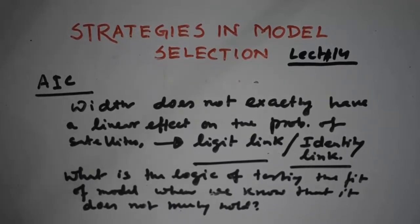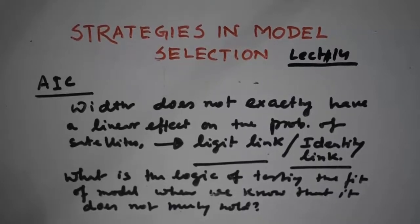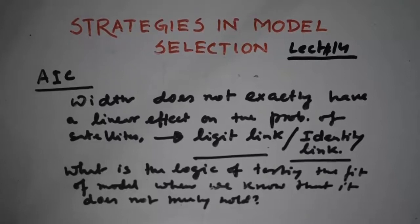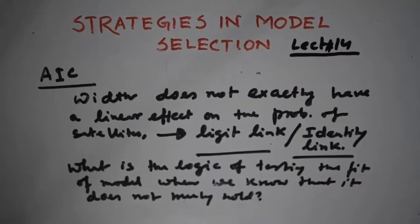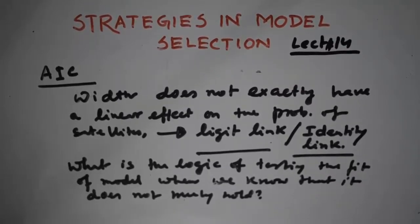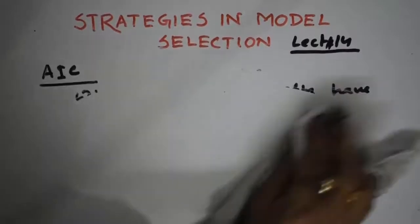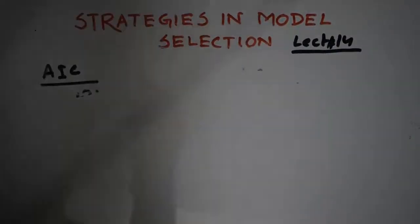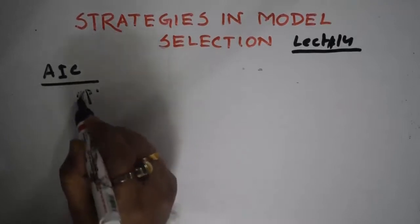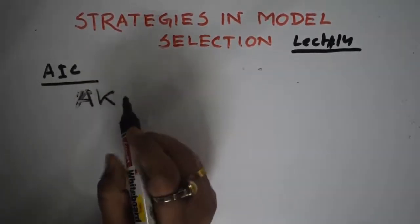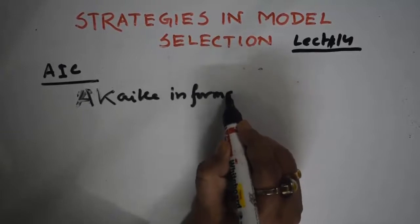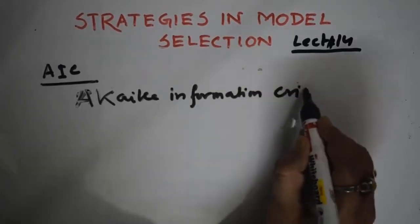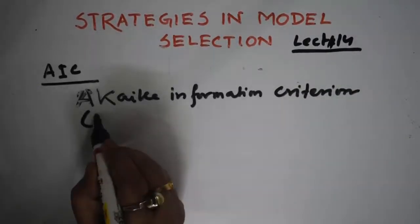Other criteria besides significance tests can help select a good model in terms of estimating quantities of interest. The best known is AIC, Akaike Information Criterion, in short AIC.